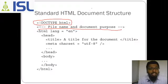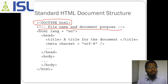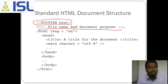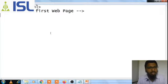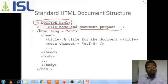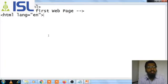Now the next line: HTML language. HTML lang equals 'en' for English. You can write this — it is up to you. If you want to write it you can, otherwise by default it will take English. So here, HTML lang equals double quote 'en'.